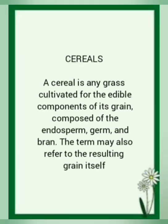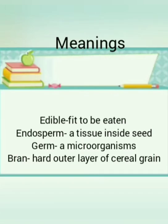A cereal is any grass cultivated for an edible component of its grain, composed of an endosperm, germ, and bran. The term may also refer to the resulting grain itself. Key meanings: edible means fit to be eaten; endosperm is a tissue inside the seed; germ refers to the embryo; and bran is the hard outer layer of a cereal grain.